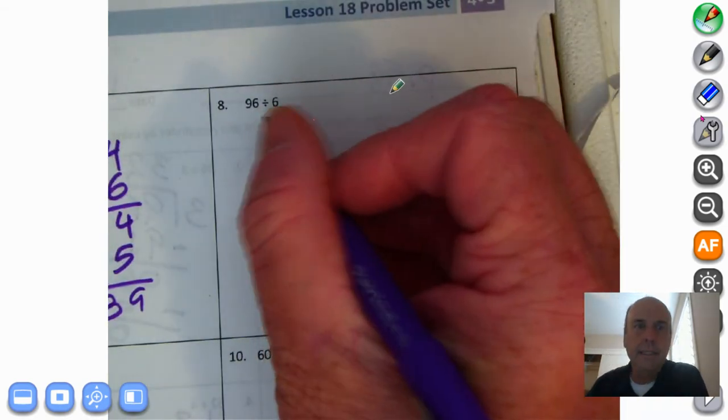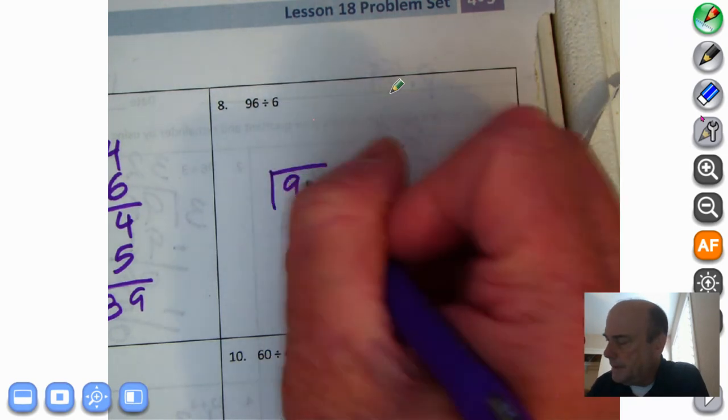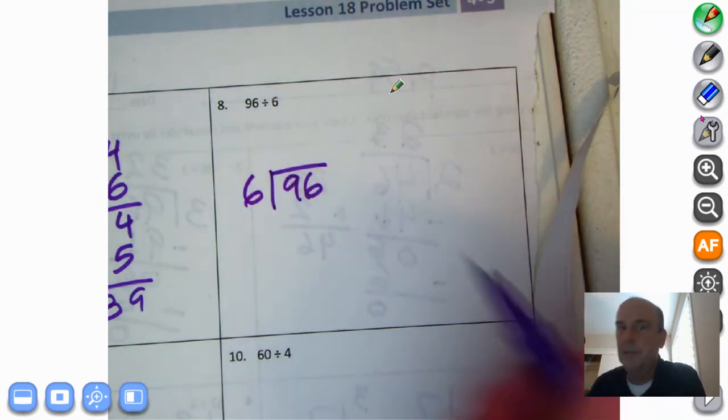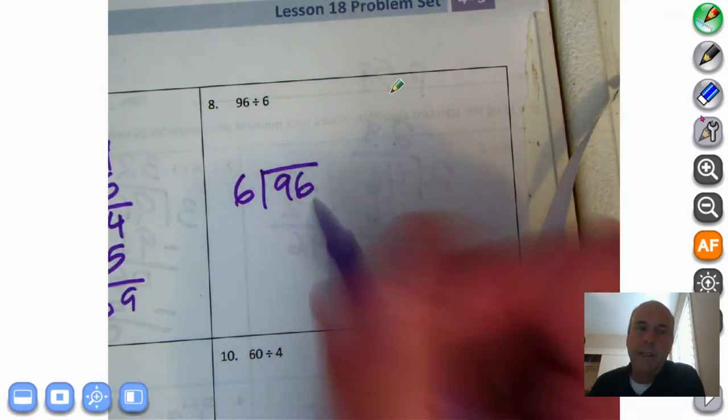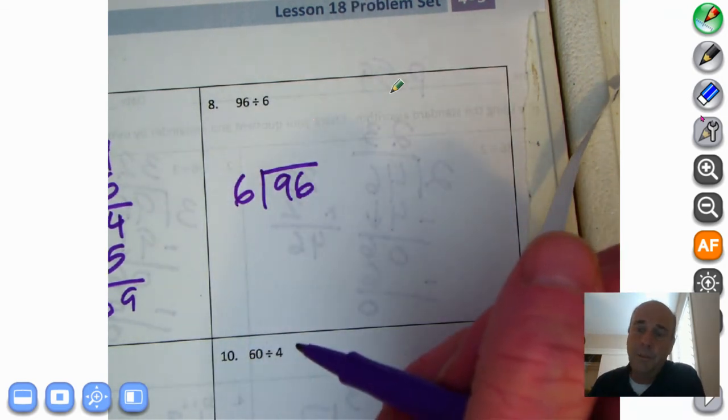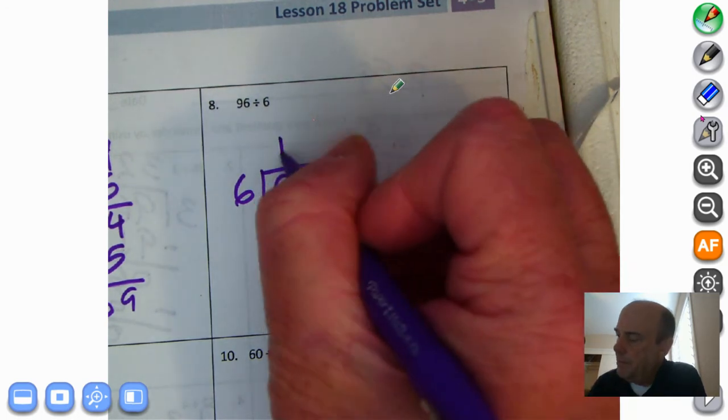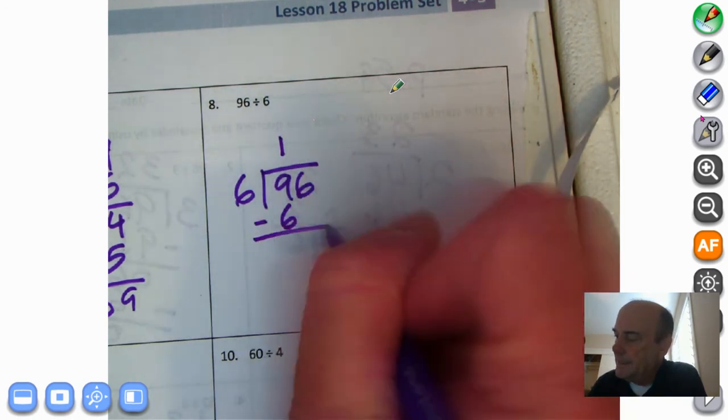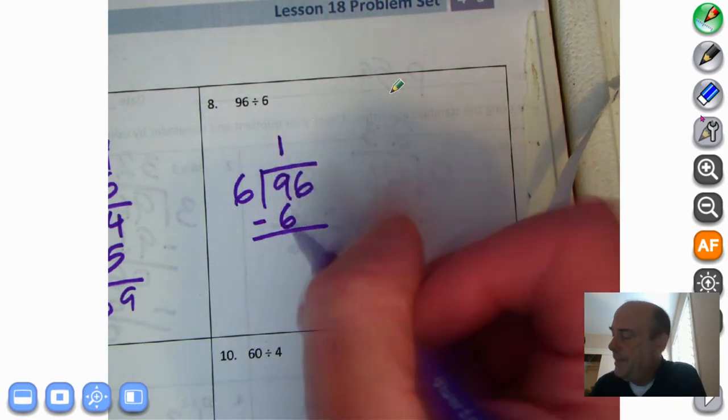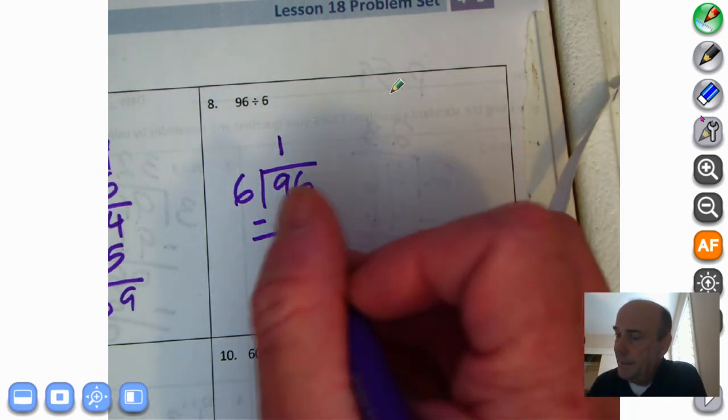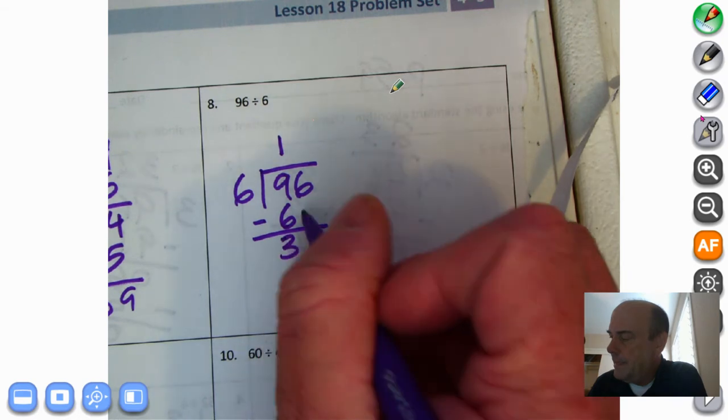We have 96 divided by 6. I'm going to put 96, my dividend in there. My divisor goes outside of the division house, as they used to call it when I was a kid. How many 6s is into 9? Only 1. 6 times 1 is 1. 6 times 2 is 12. So I can put my 1 up there, my 6 down there, which is actually a 60. 6 times 10 is 60. Notice how that's in the tens place value. 9 minus 6, our 90 minus 60 is 30. Bring down the 6.